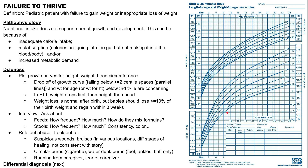In failure to thrive, you typically expect the weight to drop first, then the height, then the head circumference. It's important to note that weight loss is normal after birth — usually less than 10% of the baby's birth weight — and the baby should regain that within three weeks. When the baby is in utero they're full of water, so for a week or two after birth they can lose some of that water weight, but it should be temporary and they should regain it quickly.